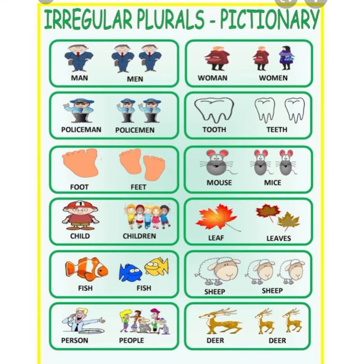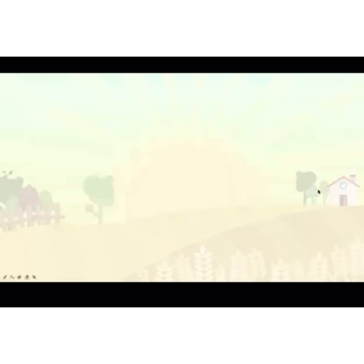Fish stays the same — tak payah tukar, fish is not fishes, fish tetap sama walaupun banyak. Sheep — one sheep, even 10 sheep, tetap sheep — jangan tambah 's'. Person — one person, bila lebih daripada seorang we say people. Agak-agak awak boleh buat tak?